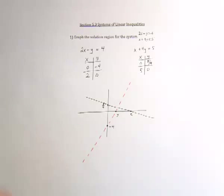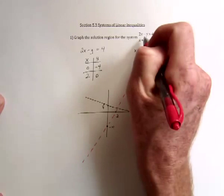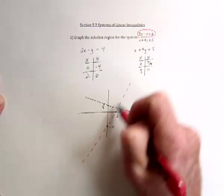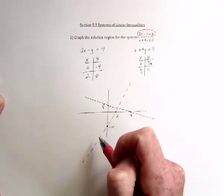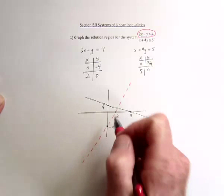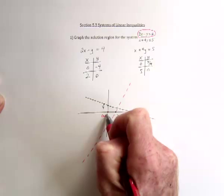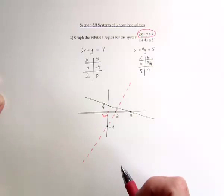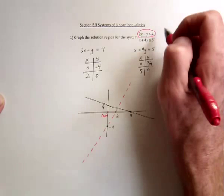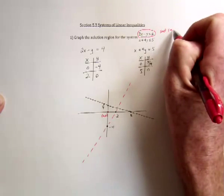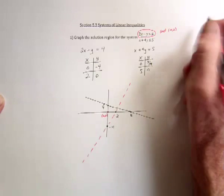So first of all, we go to what was the dotted line. And looking at the dotted line, pick a point that's on one side or the other. Usually the easiest to use is 0, 0. So use that as a test point. And so, if in this one we test 0, 0, so plug in 0 for x and 0 for y,